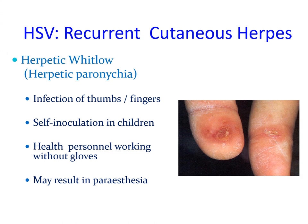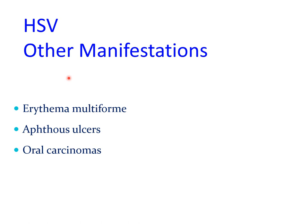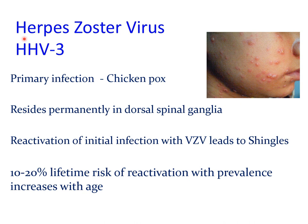In addition to primary and recurrent herpes infections, herpes simplex viruses are also associated with a number of other lesions including erythema multiforme, aphthous ulcers, and some oral carcinomas. You can read more about these in your self-directed learning.